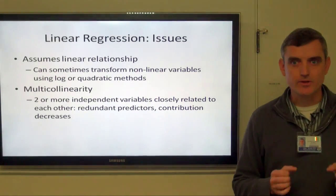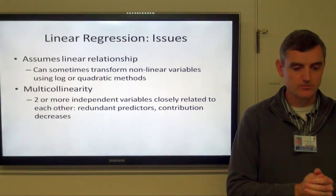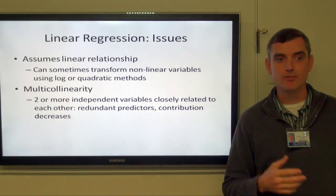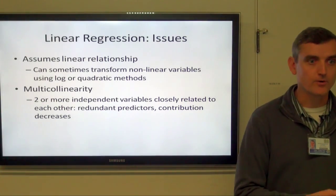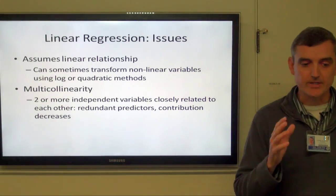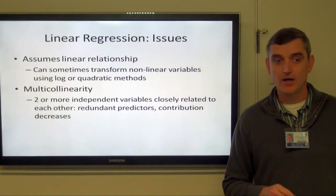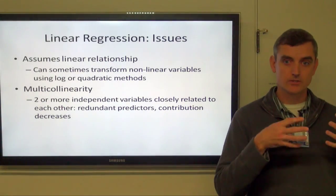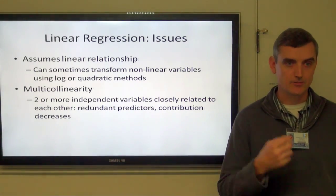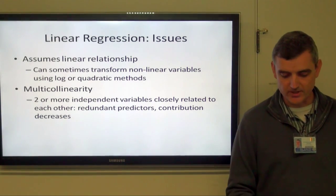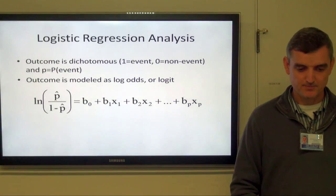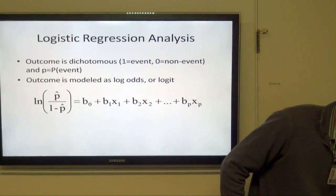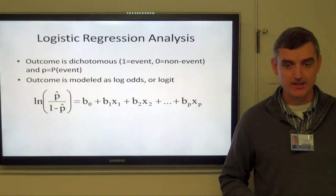Issues with linear regression: one is that it assumes the relationship is linear. If it's curvilinear or quadratic, you may have to do some kind of transformation. It's important to get to know your data and look at it graphically before diving into a linear regression. The other issue is multicollinearity — when two or more independent variables are so strongly related to each other that it becomes redundant to put them both in, and you lose some of the impact of each individual one.